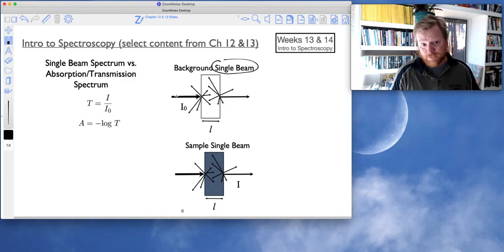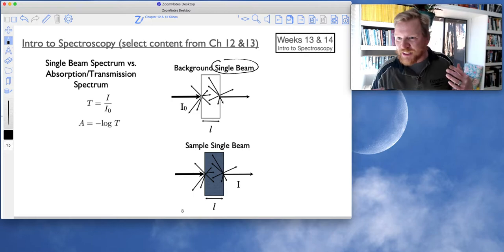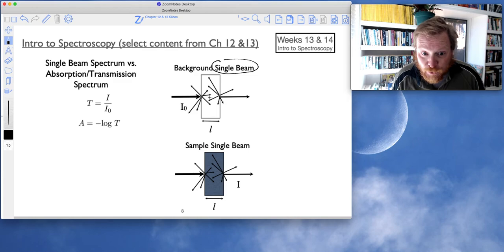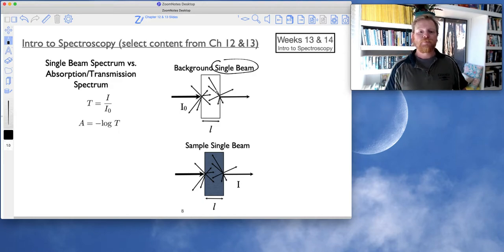When our light comes in and starts interacting with the cuvette, we're going to get specular reflection, diffuse reflection, refraction coming through the cuvette. And also, all of these processes are going to occur on the other side of the cuvette. And so all of these will contribute to light not making it to our detector.